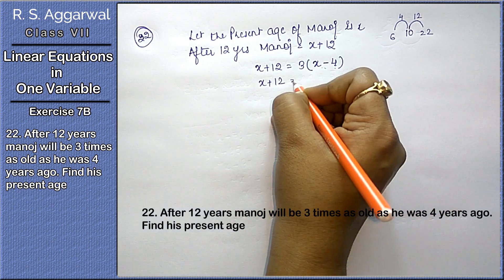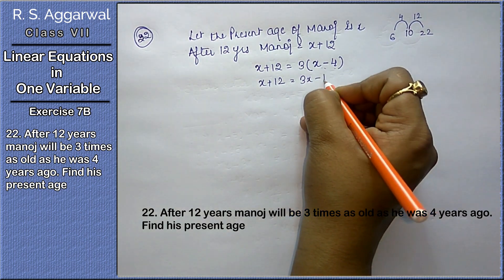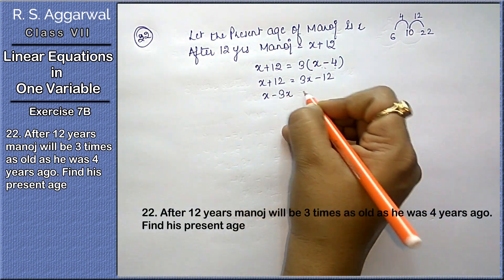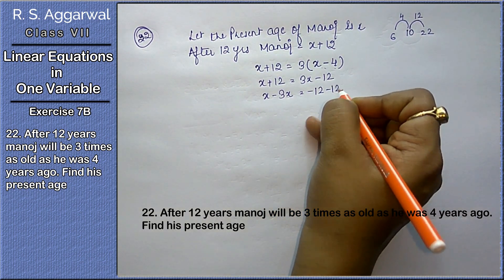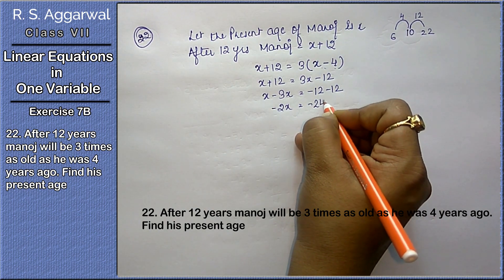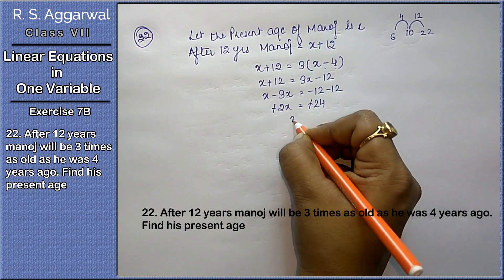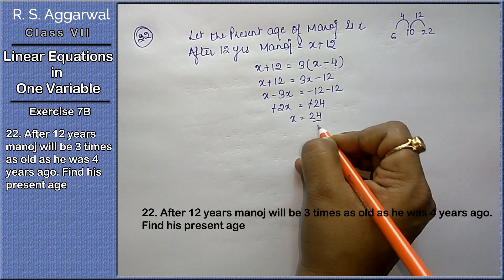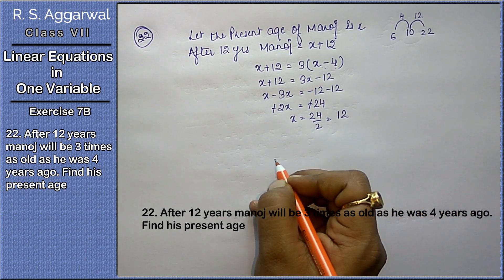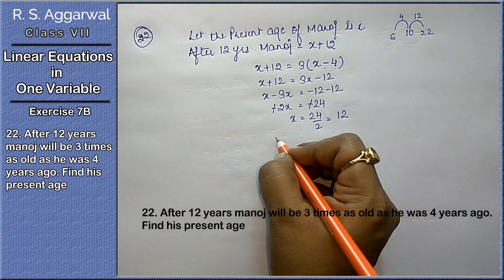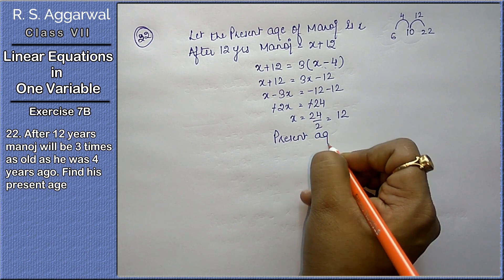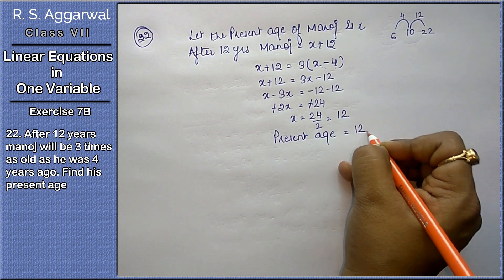So x plus 12 equals to 3(x minus 4), which gives x plus 12 equals 3x minus 12. Collecting x terms and non-x terms: minus 2x equals minus 24, so x equals 24 upon 2, that is 12. The present age of Manoj is 12 years.